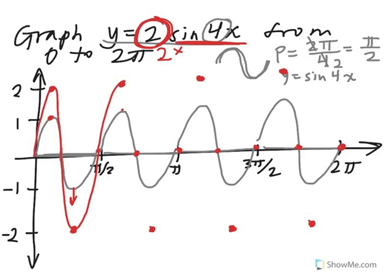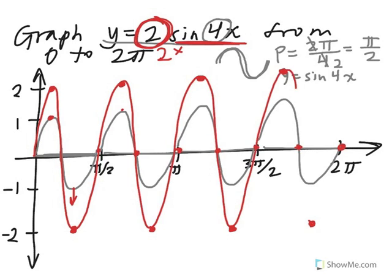So let's just finish our curve here. And this is the graph of y equals 2 times sine of 4x.